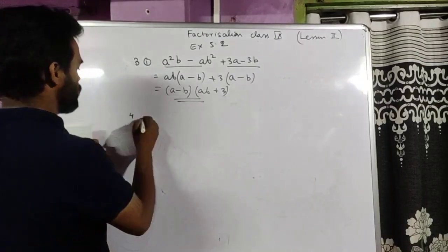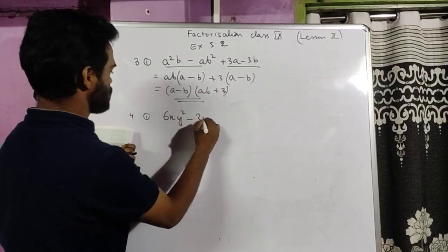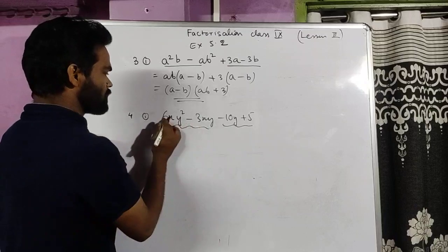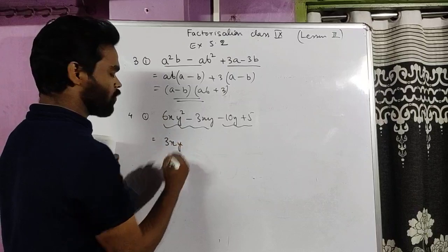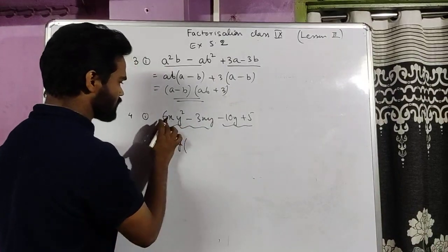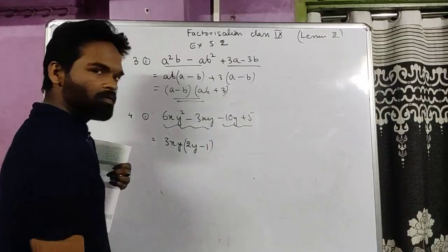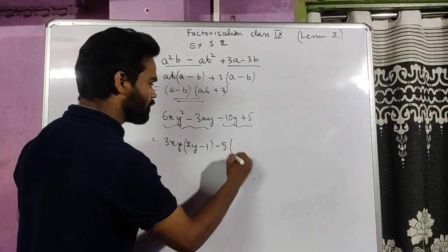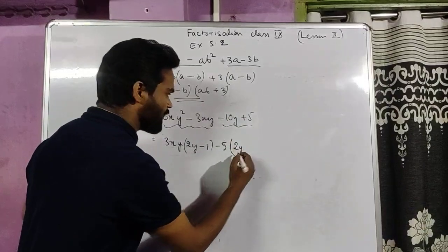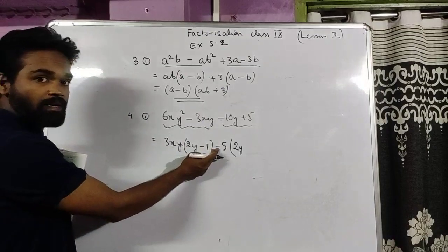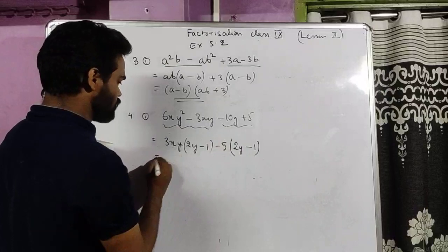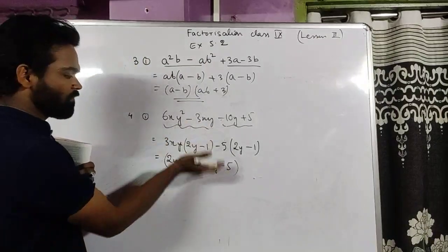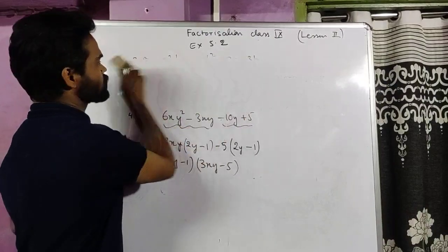Sum 4 part 1: 6xy² minus 3xy minus 10y plus 5. The grouping is already done. The SCF of the first two terms is 3xy, giving 3xy(2y minus 1). When you divide 3xy by 3xy you get 1, so the bracket is (2y minus 1). Then taking 5 common with a minus sign: minus 5(2y minus 1) — the sign changes because we took the minus sign outside, making it minus 1. Both groups have (2y minus 1) as common, leaving 3xy from the first and minus 5 from the second. Factorized: (2y minus 1)(3xy minus 5).